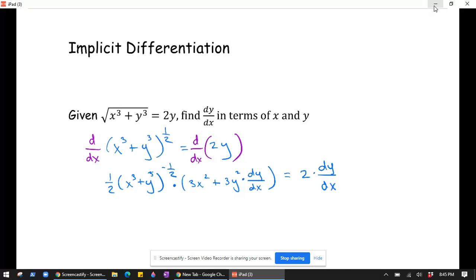Okay, so it's still kind of messy. We've got to get the dy/dx terms together. So it looks like, well actually, we're going to distribute it. So I'm going to distribute it to these two terms, so I end up getting 3x squared over 2.